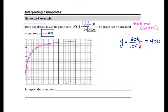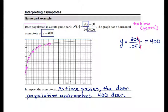And what we see is that the maximum sustainable population appears to be about 400 deer. And as time increases, the population approaches that number 400. So there's a few different ways that we could state this. One interpretation would be a straightforward description: As time passes, the deer population approaches 400 deer.